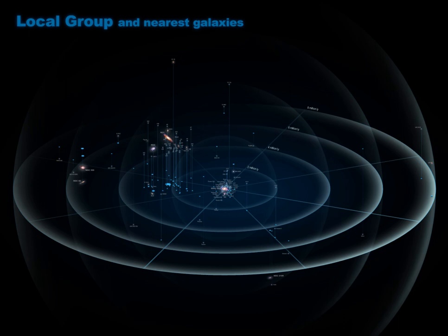The local sheet is inclined 8 degrees from the local supercluster. The so-called Council of Giants is a ring of 12 large galaxies surrounding the local group in the local sheet, with a radius of 3.75 mpc.